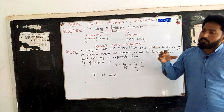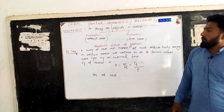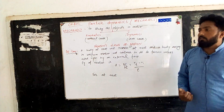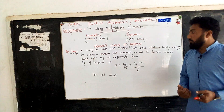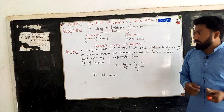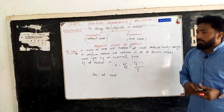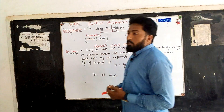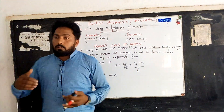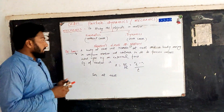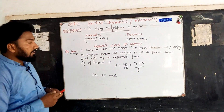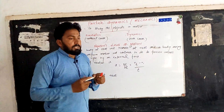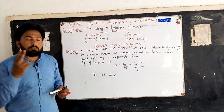An object at rest will remain at rest, and an object in uniform motion will continue in uniform motion, unless an external force is applied. This is Newton's first law of motion. One important thing: when we talk about motion here, we talk about continuous uniform motion — uniform velocity.